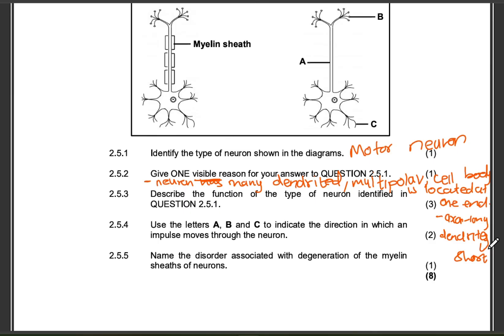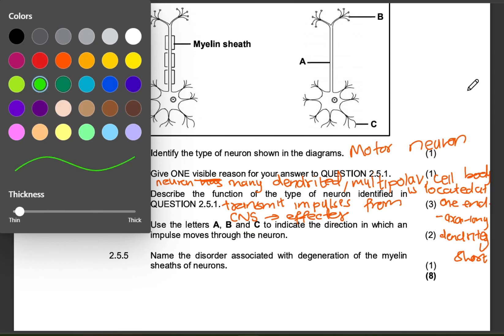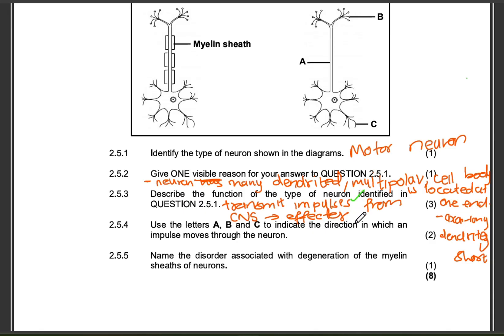Describe the function of the motor neuron. This neuron transmits impulses — you have to tell us what it transmits, from where to where. It transmits impulses from the central nervous system to the effectors. A mark for transmit, a mark for central nervous system — write it in full, not CNS — and a mark for to the effector. Or you can say from the interneuron to the effector. That's your three marks.